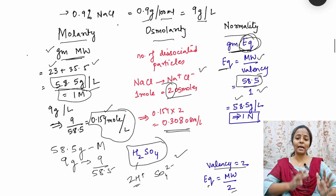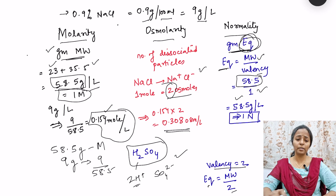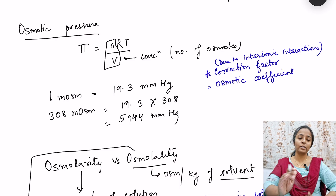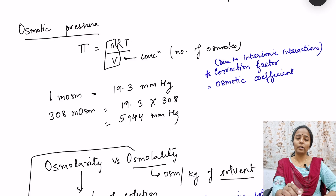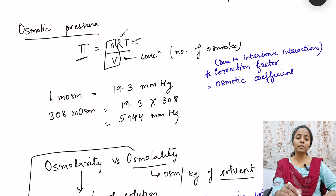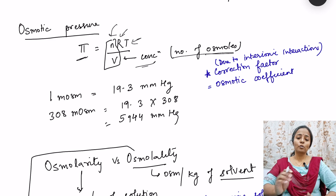So that covers molarity, osmolarity, and normality. Moving on to the concept of osmotic pressure. Osmotic pressure is the pressure exerted by solutes in a solution and is calculated by the equation: π = nRT/V. In this equation, R is the gas constant and T is the absolute temperature — both constants. Osmotic pressure π is therefore determined by concentration, that is, n/V — the number of osmoles per liter.